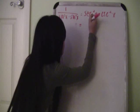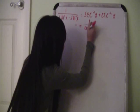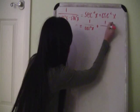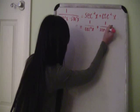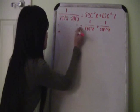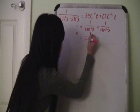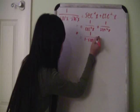Secant squared x is the same as 1 over cosine squared x, and cosecant squared x is the same as 1 over sine squared x. We will change cosine squared x to 1 minus sine squared x due to the Pythagorean identity.